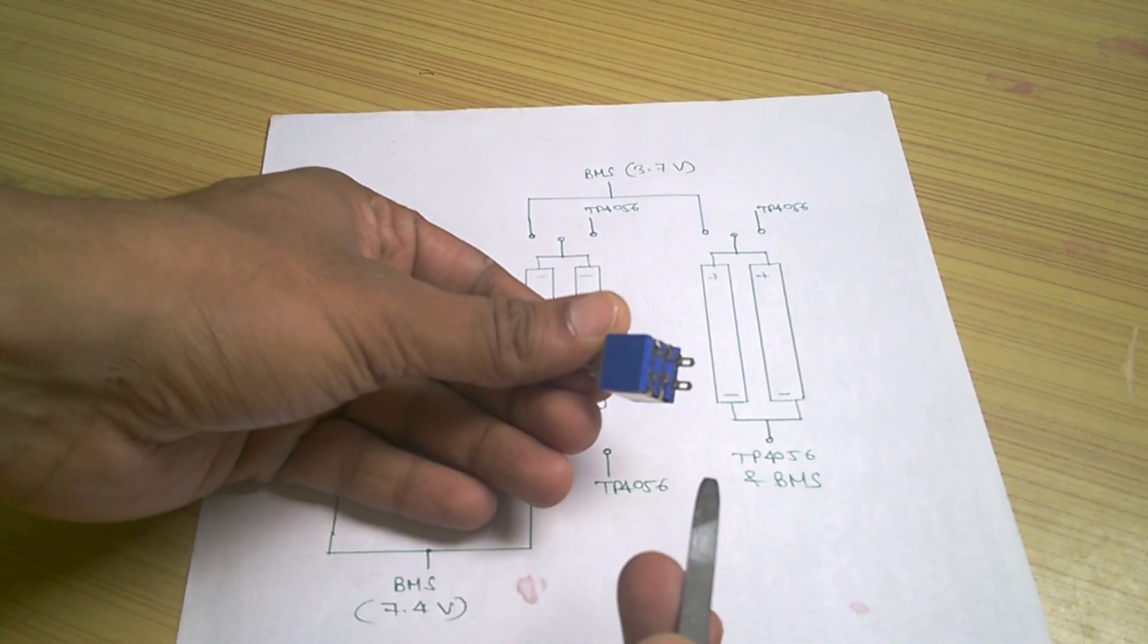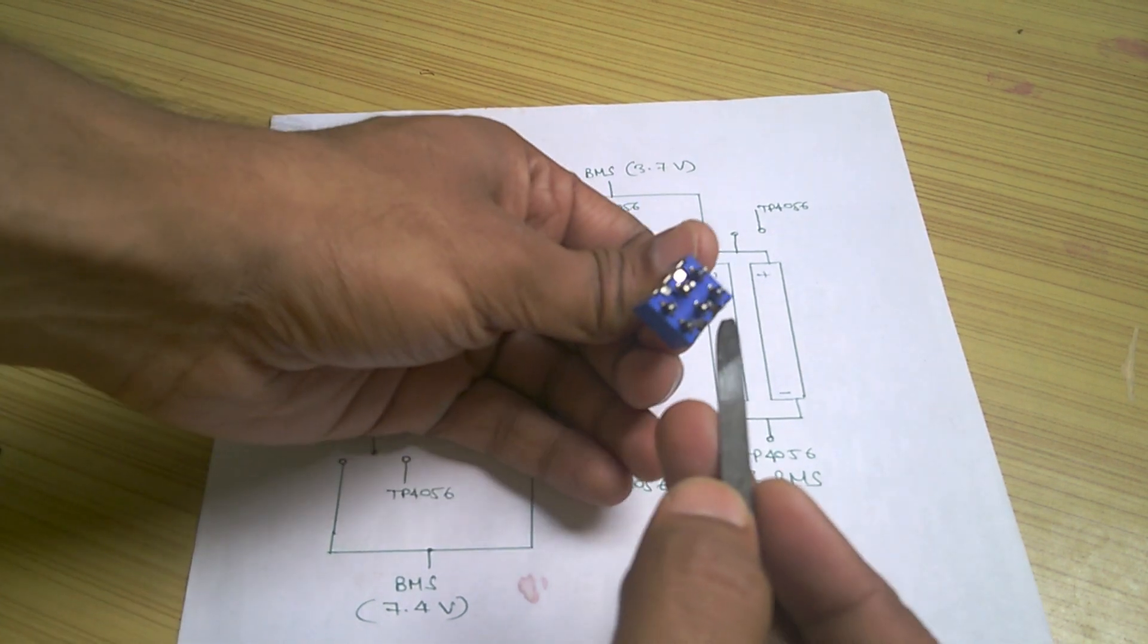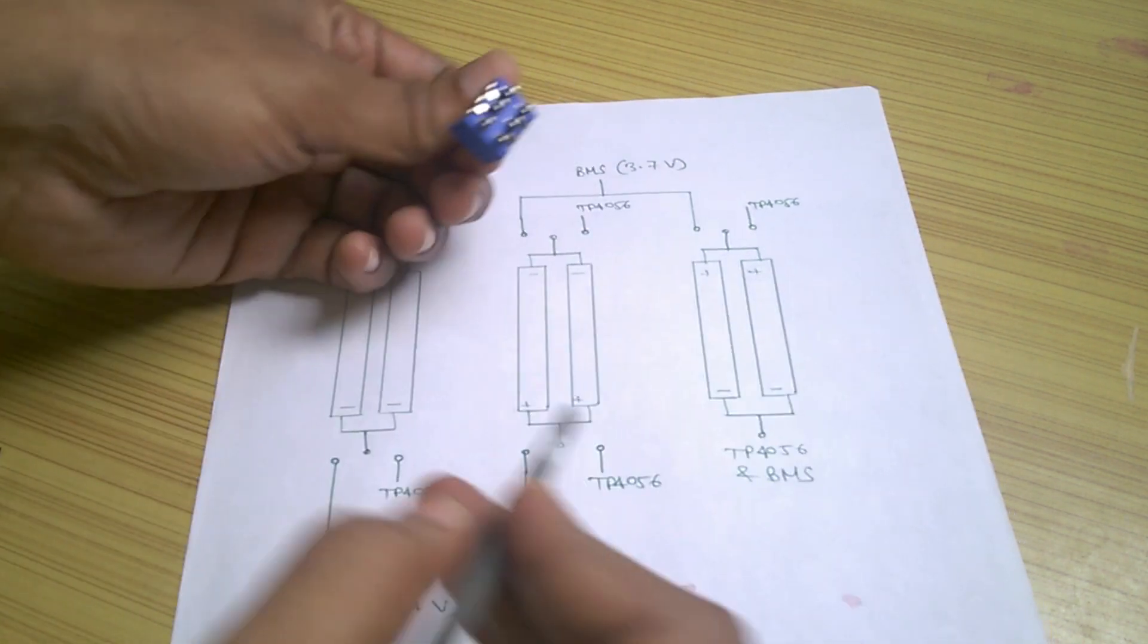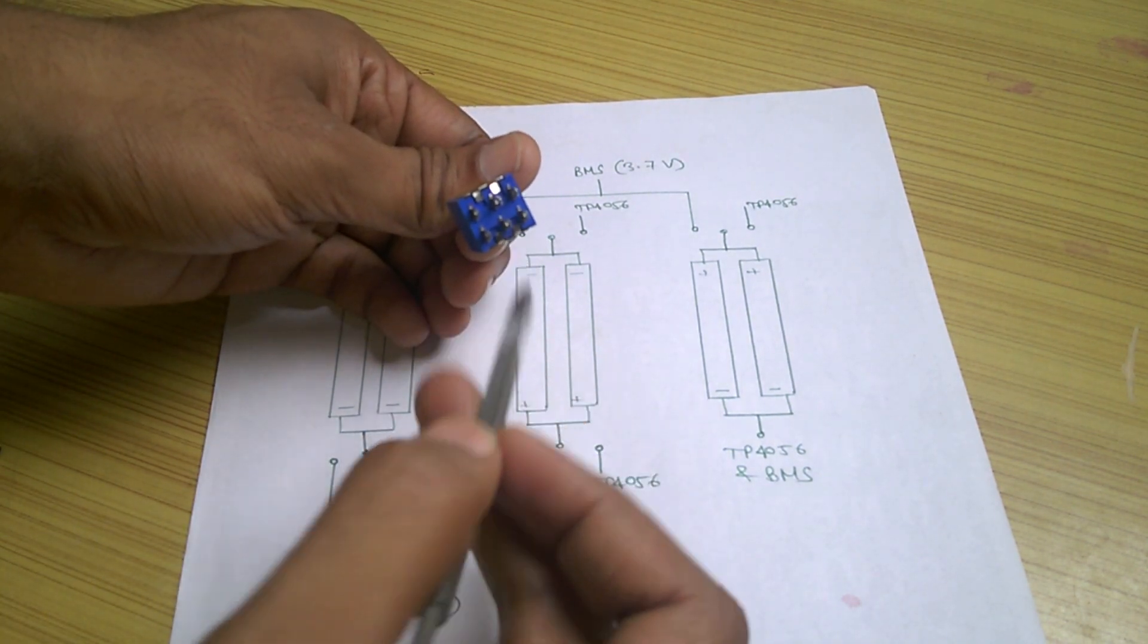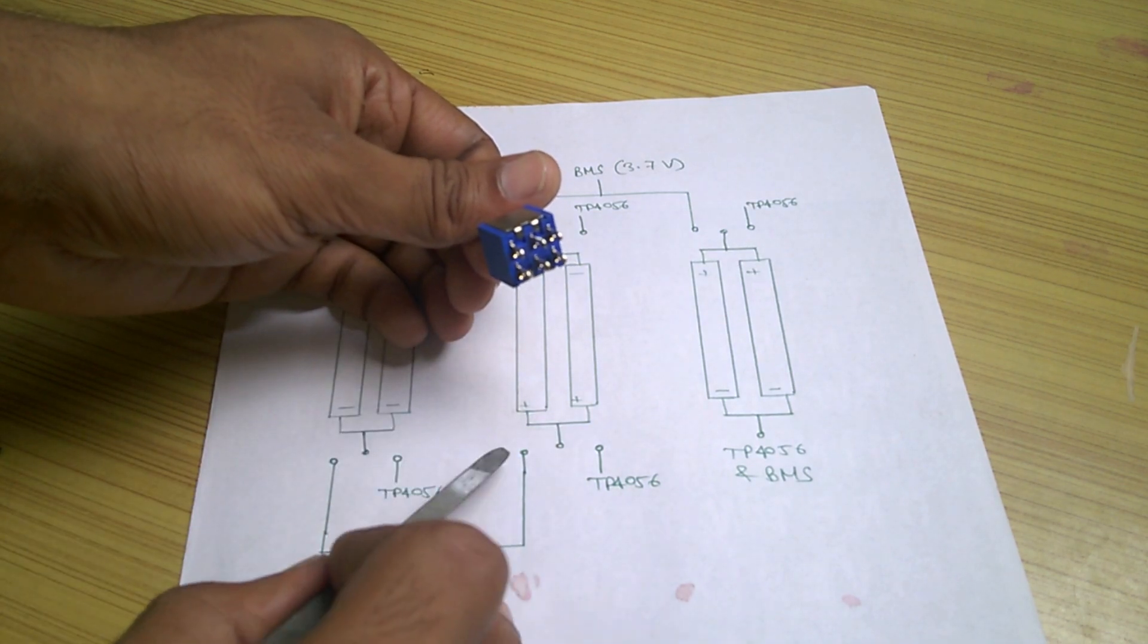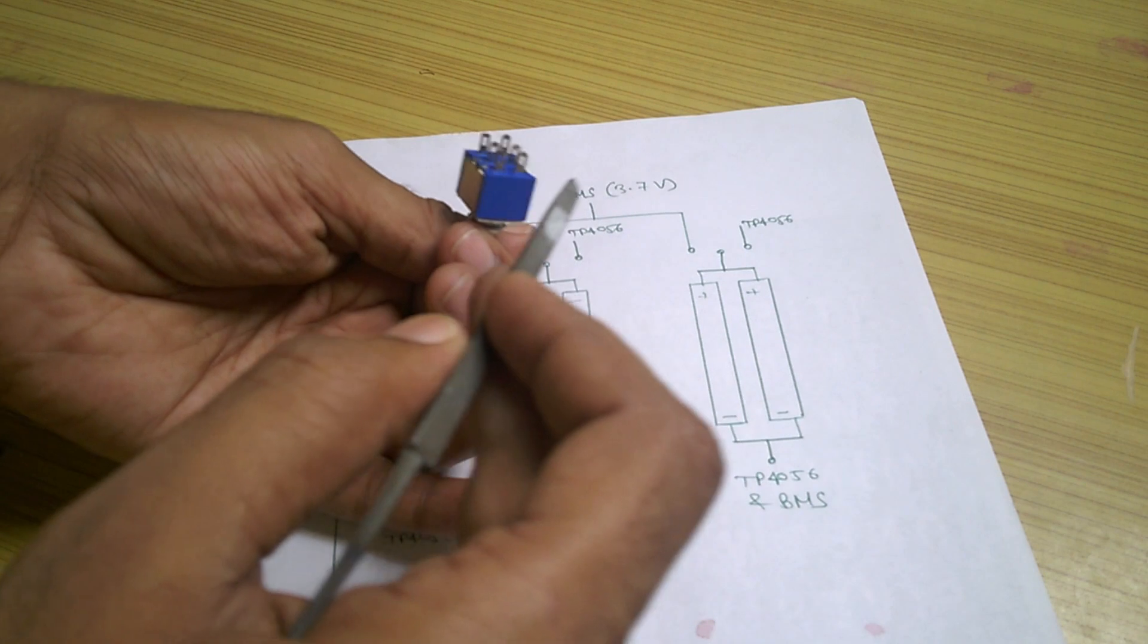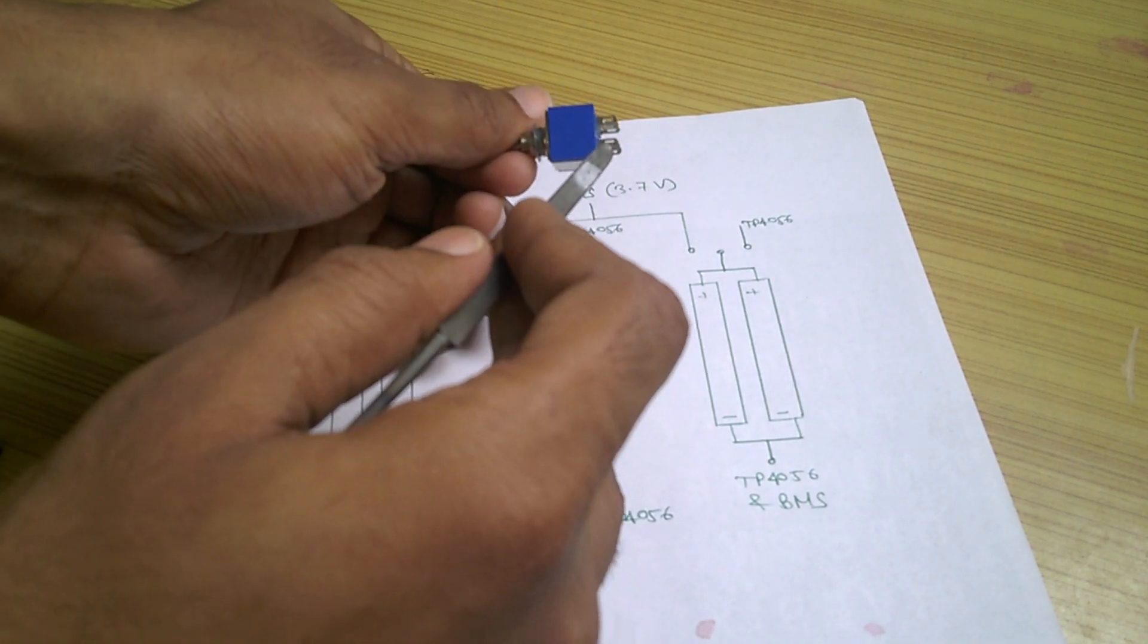This is the DPDT switch we will be using. And these are the two poles of this switch. This terminal will be connected to any one pole of the switch. And the other terminal will be connected to other pole of the switch. These four circles are the four throws of the switch. Two throws on any one side are shorted by using a wire.